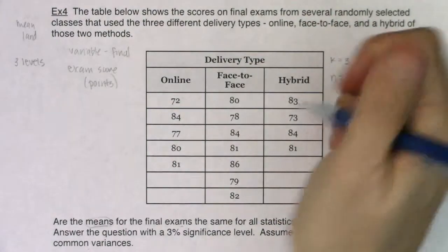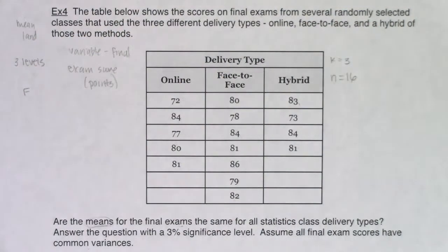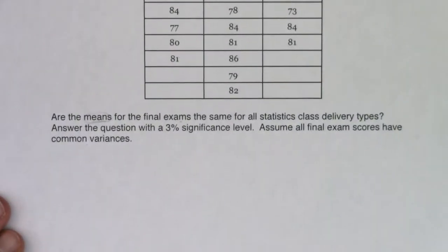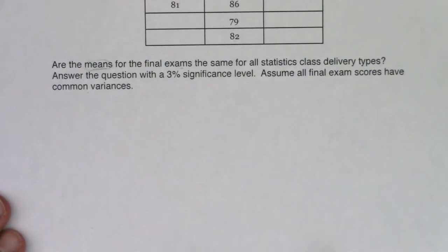So I have three levels or groups if you want to call them, but levels is the official term if you're looking at averages. So I know k is going to equal three. I'll keep that in mind. And let's see how many students we had overall.